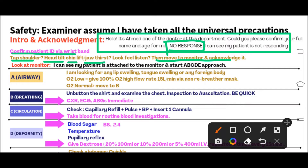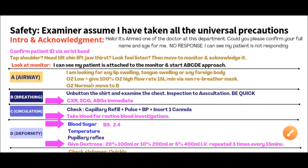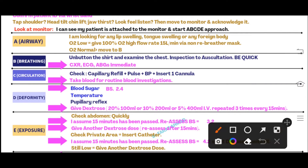Move toward the monitor and acknowledge it. Say: 'I can see my patient is attached to the monitor, and now I am going to start the ABCDE approach.' In real life you would attach the monitor yourself, but in the exam the patient will already be attached. Acknowledge this and say you are going to start the ABCDE approach directly.